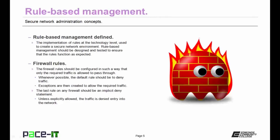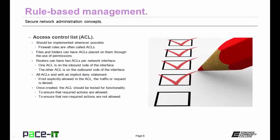Firewall rules fall under rule-based management. The firewall rules should be configured in such a way that only the required traffic is allowed to pass through the router. Whenever possible, the default rules should be to deny traffic. Once that default rule is in place, exceptions are then created that allow the required traffic to pass through. The last rule on any firewall should be an implicit deny statement — meaning that unless explicitly allowed, the traffic is denied entry into the network. The access control list is another part of rule-based management, and the ACL should be implemented wherever possible.